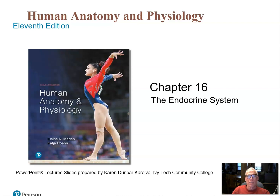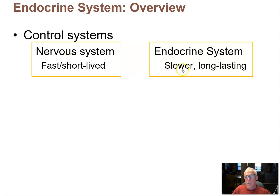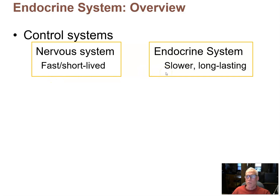Today we'll kick off our second semester of anatomy and physiology with chapter 16, the endocrine system. The endocrine system is another overarching control system, much like what we studied at the end of last semester — the nervous system — but think of it as a slow-motion version. If the nervous system is lightning fast with action potentials propagating down axons, the endocrine system takes time to release chemical signals and activate its targets.